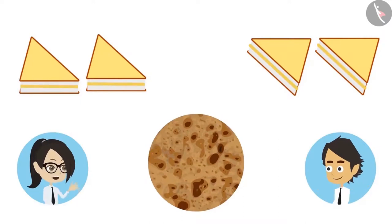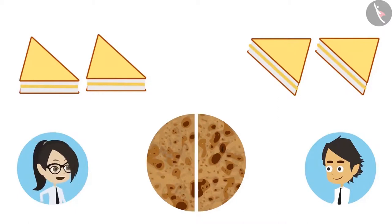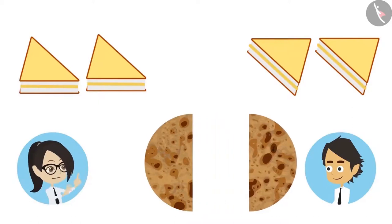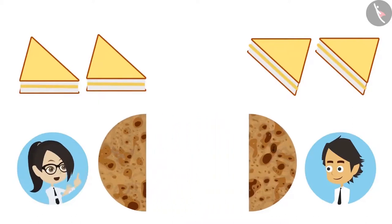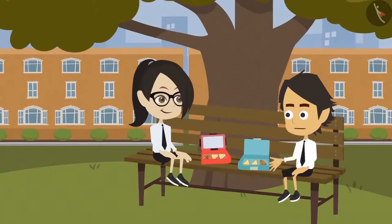This is very easy. We will cut it from the middle. Now look, we made two equal halves of one paratha. Now you eat one part and I will eat one part. This means objects can be counted and divided to make a half.